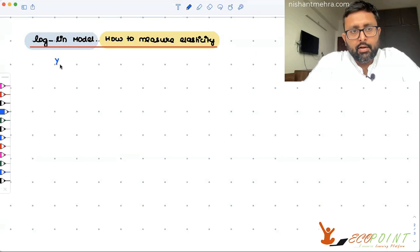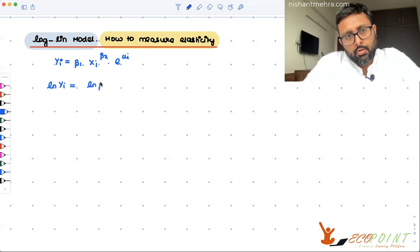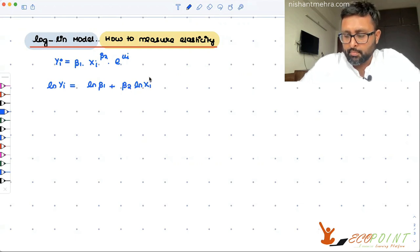Let us look at this model: yi equals beta 1, xi to the power beta 2, e to the power ui. You can take log of both sides: log yi = log beta 1 plus beta 2 log xi plus ui. Log of e to the power ui is just ui.